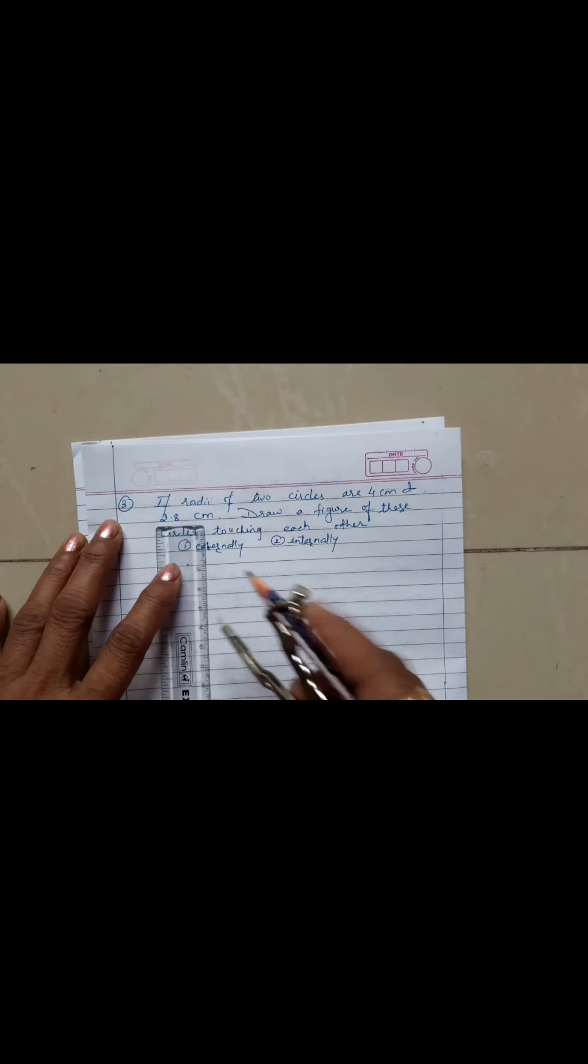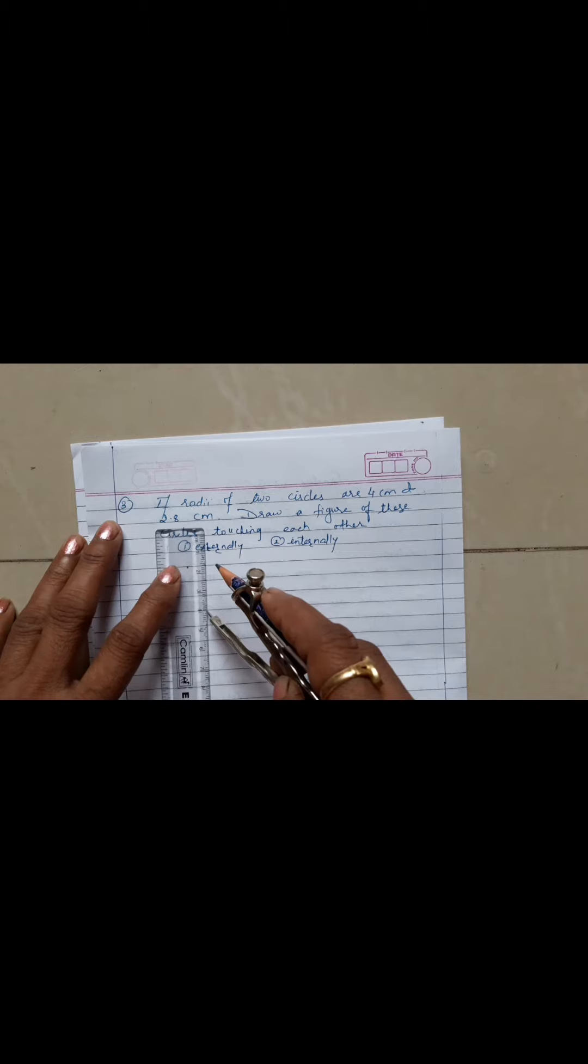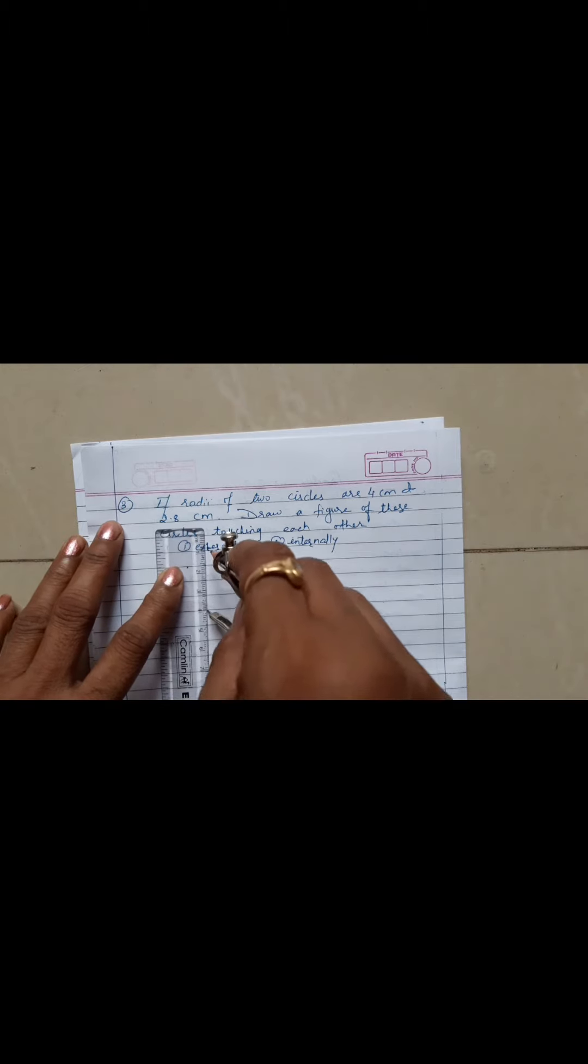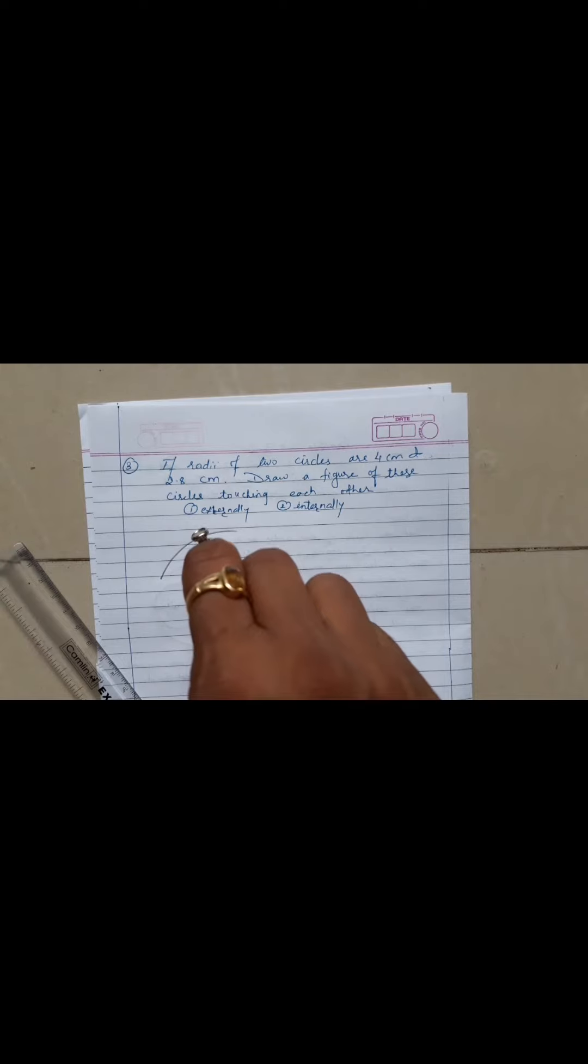Take first four centimeters using your scale. So this is four centimeters, so I will draw here first circle. This radius is four centimeters.